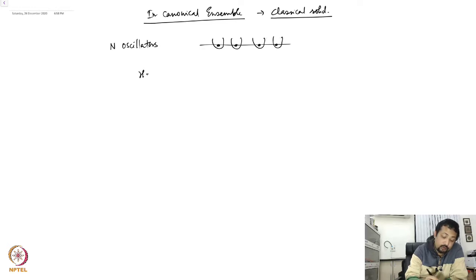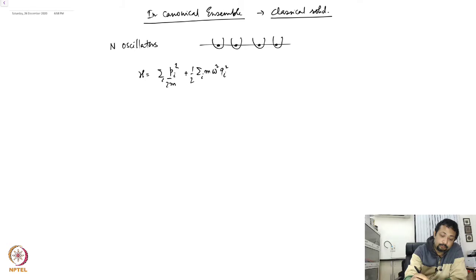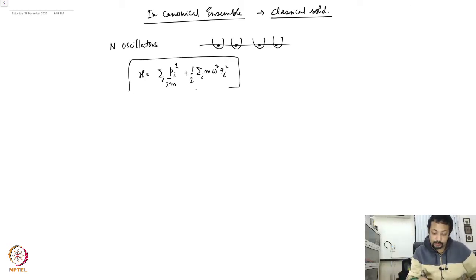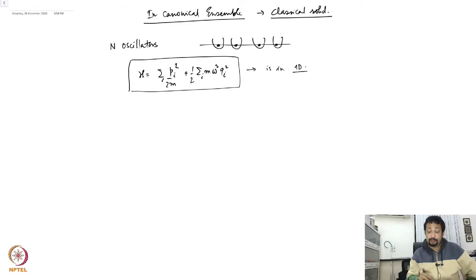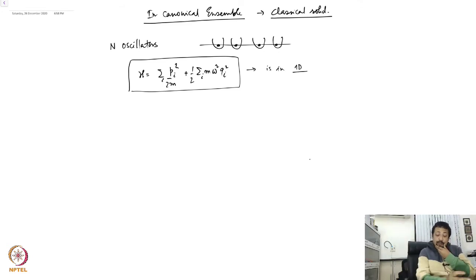So the Hamiltonian is given by p_i squared over twice m, plus sum over i of half m omega squared q_i squared. This is in 1D one-dimensional space; the generalization to higher dimensions is not a very complicated problem.